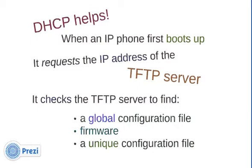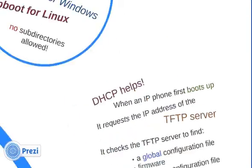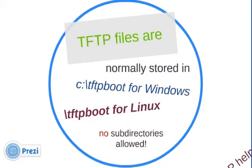The DHCP server provides the TFTP server IP address, and then the phone checks the TFTP server to find a global configuration file, some firmware, and a unique configuration file. TFTP files are normally stored in C:\TFTPBOOT for Windows TFTP servers and /tftpboot for Linux TFTP servers.